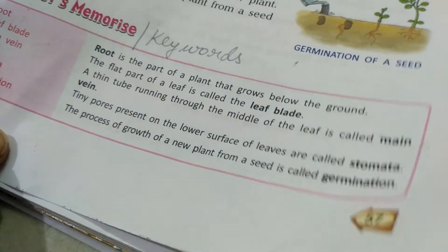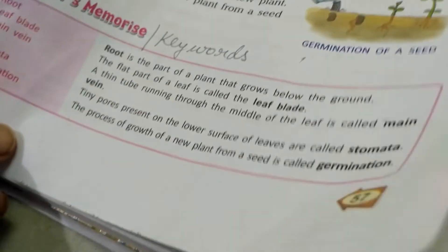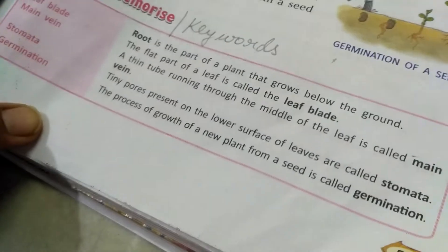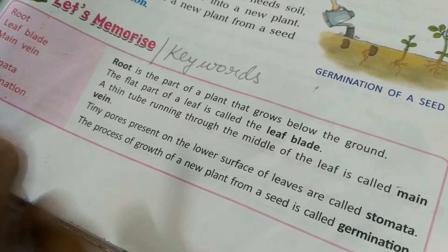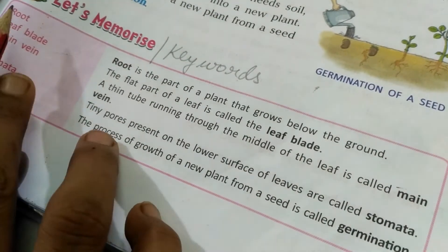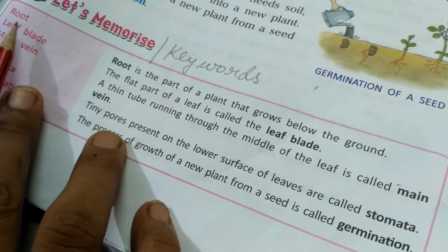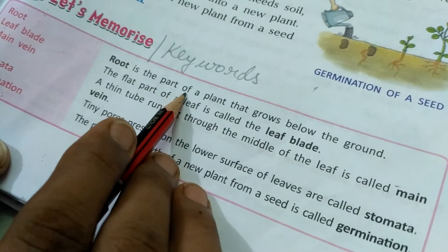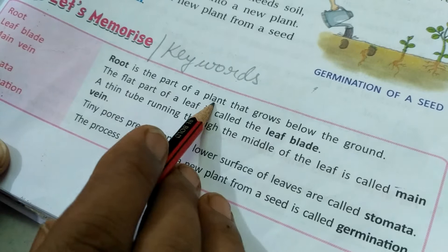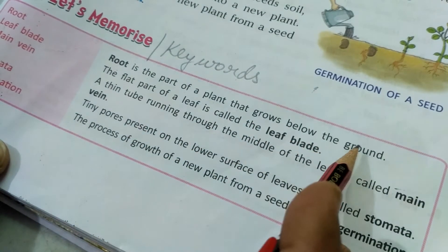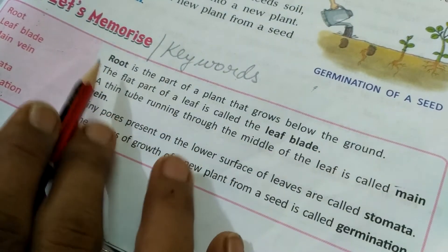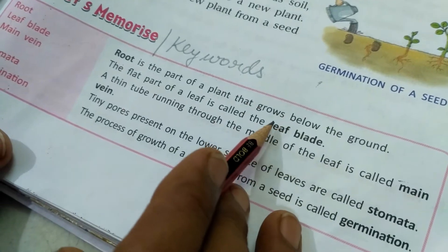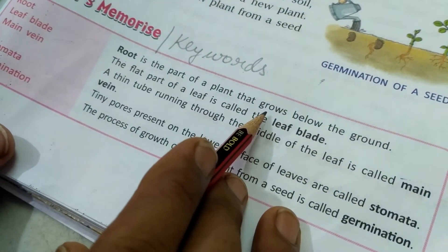Now I am going to explain the keywords of this chapter, given on page 57. The first keyword is root. Root is the part of a plant that grows below the ground — joh dharti ke niche grow kerta hai.